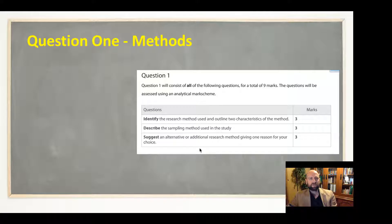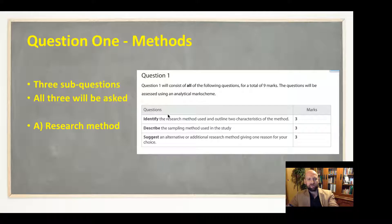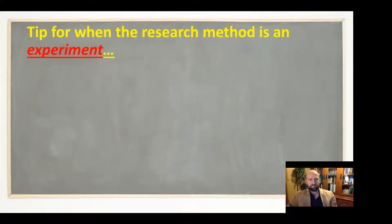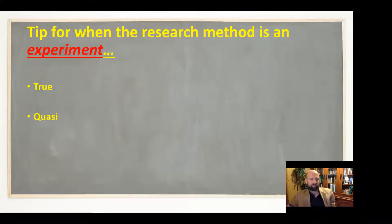Today we're going to look at just question 1 — the methods — and specifically question 1a: identify the research method used and outline two characteristics. The tips in this video are about how to make sure we get the full three marks for this first question if an experiment is used. It might be a true, quasi, natural, or field experiment — these are the four types of experiments you need to know about for Paper 3.